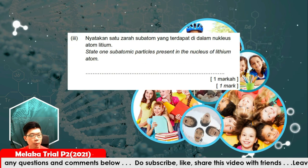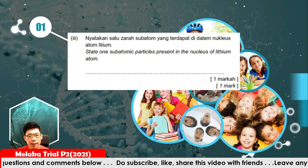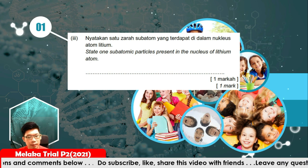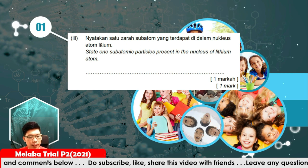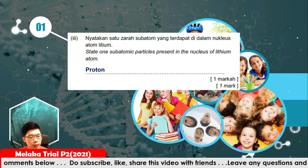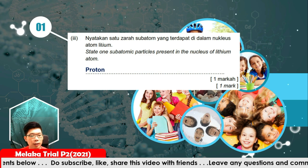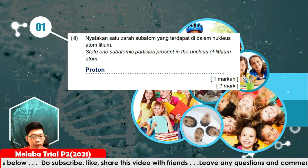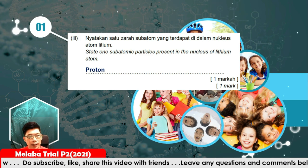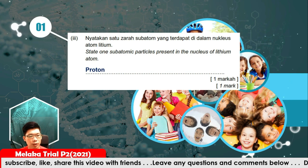Next, Step 1: subatomic particles present in the nucleus of the lithium atom. So it has protons and neutrons — they are the subatomic particles in the nucleus.